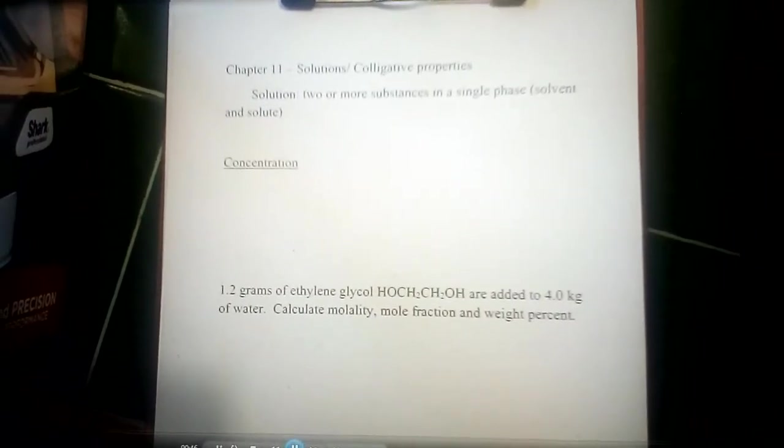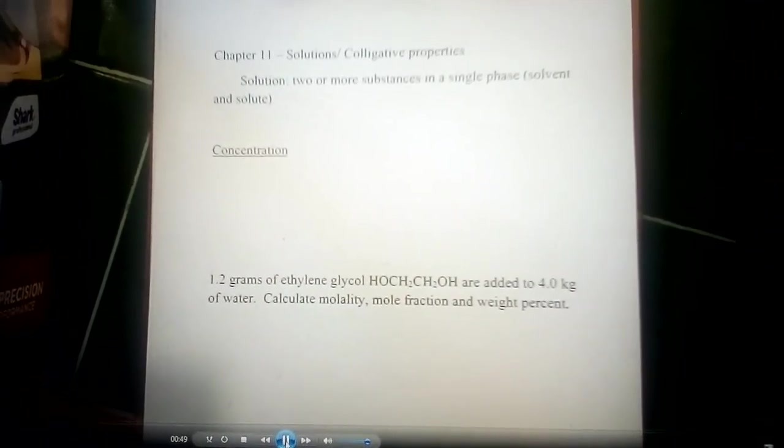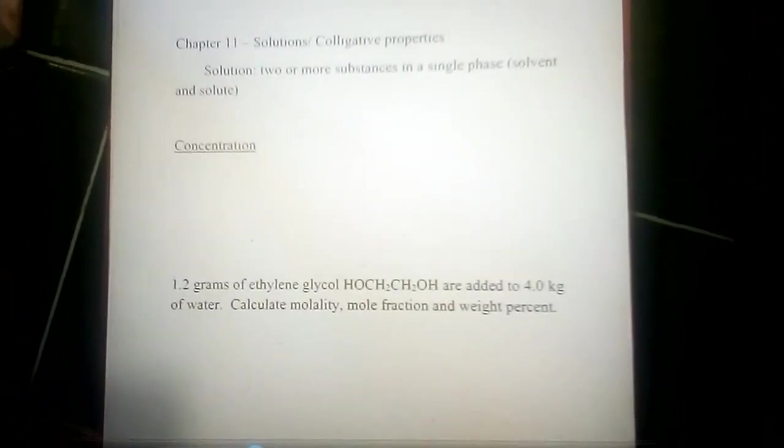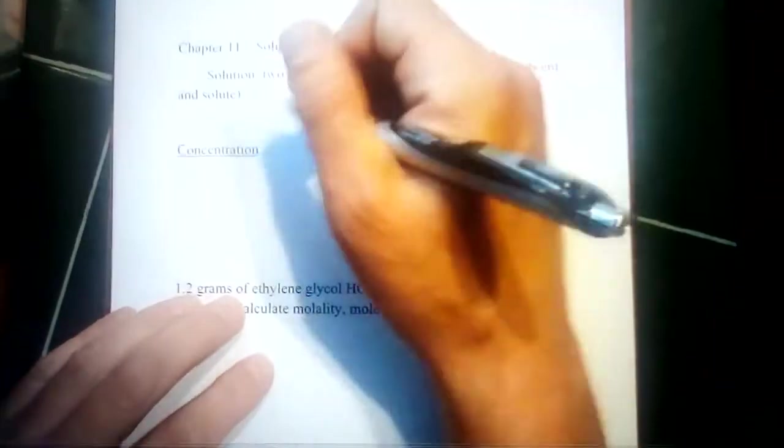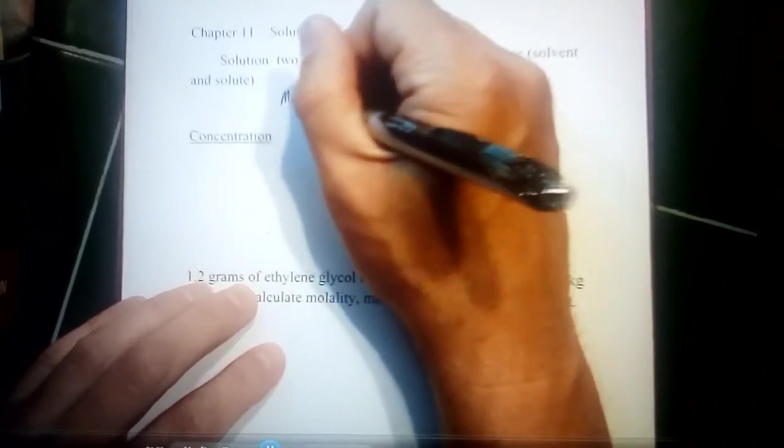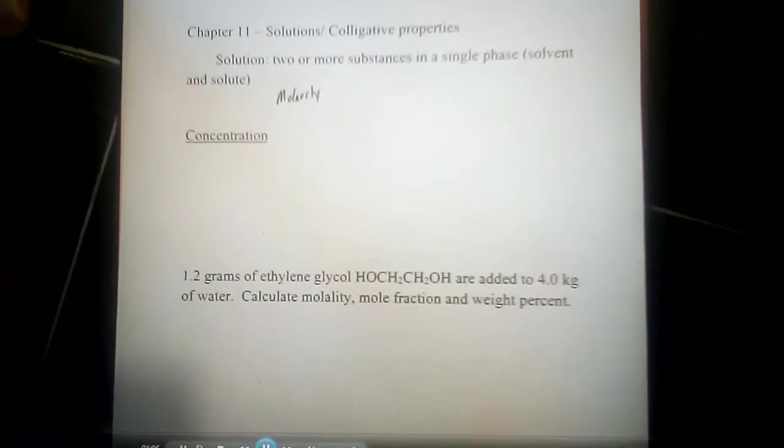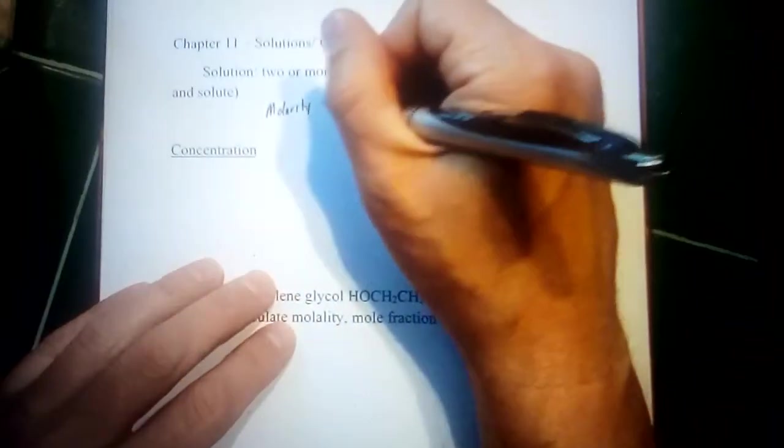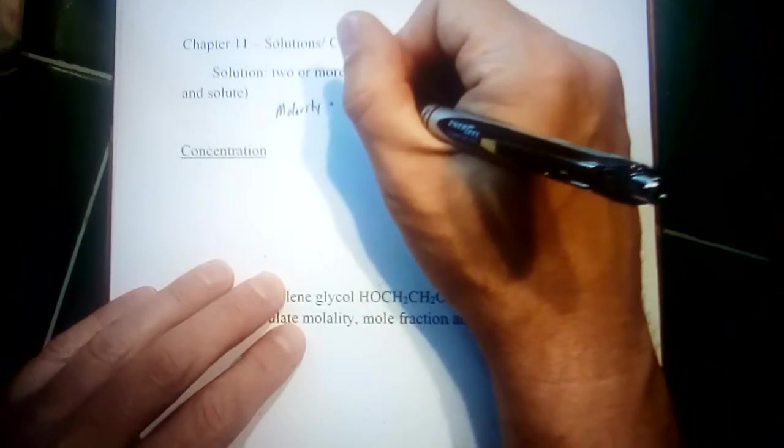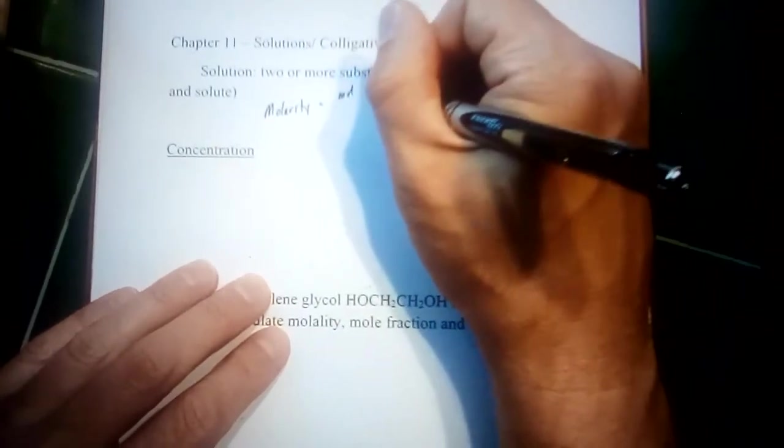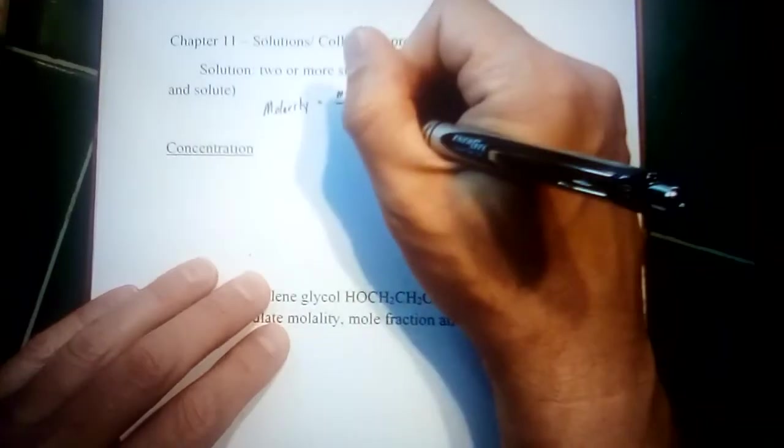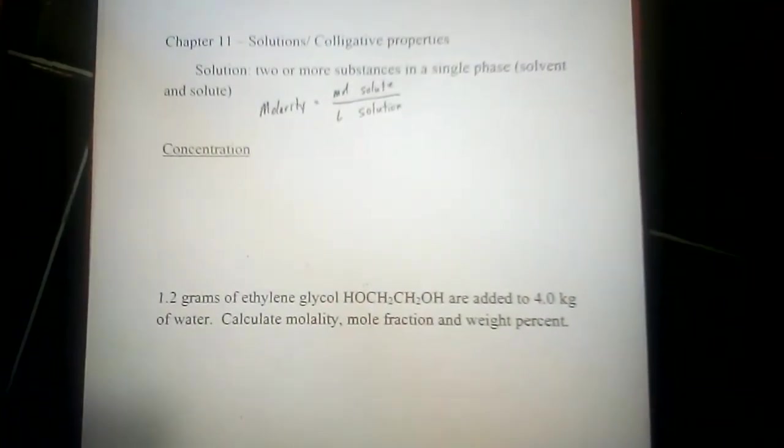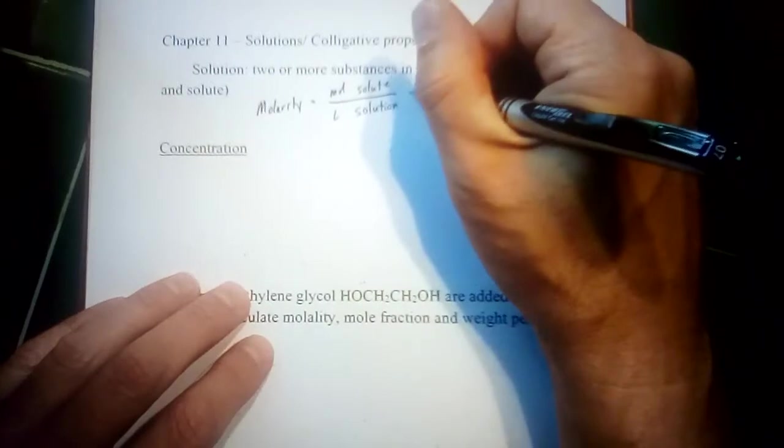Now, one of the primary aspects of solution is how we describe how much of the different portions there are, how much solute is there versus how much solvent is there. And going back into Chem 1, we learned one method of doing this called molarity, and this is certainly the most useful for chemical reactions because it gives us an easy link to how many moles of material are present in our solution. So molarity was defined as moles of the solute per liters of the total solution. So not just the solvent, but the total solution that you make when you mix them together.